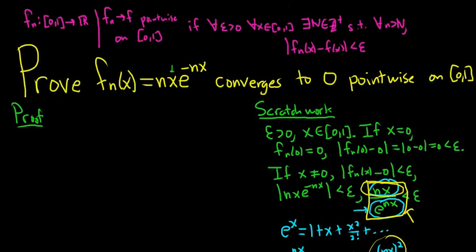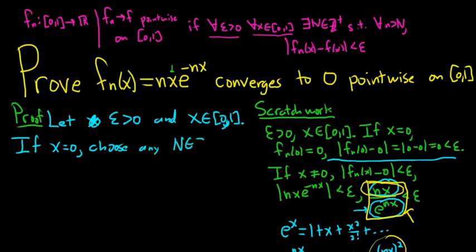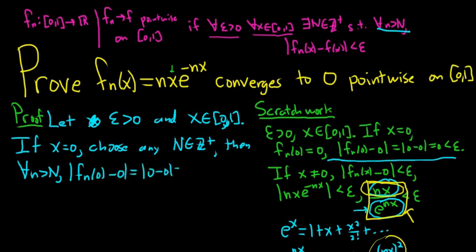Now let's carefully write the formal proof. Let epsilon be greater than 0 and let x be in [0, 1]. We take cases. If x equals 0, choose any positive integer N — it doesn't matter. Then for all little n bigger than capital N, we have |f sub n of 0 minus 0| equals |0 minus 0| equals 0, which is less than epsilon. So the proof is complete for x equals 0.